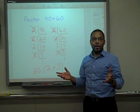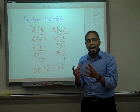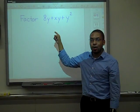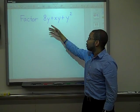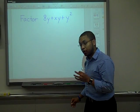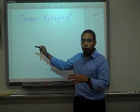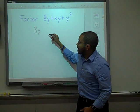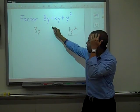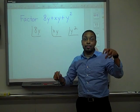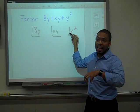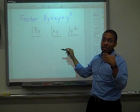Now, some of you may be wondering: why do we have to know this? Well, because it prepares you — it gives you the actual skills you need to do a problem like this when you get to algebra. I'm going to show you how to factor this out: 8y plus xy plus y squared. Let's factor out 8y, xy, and y to the second power. Y squared actually means y times y — the exponent tells you how many times to write the base as a factor.